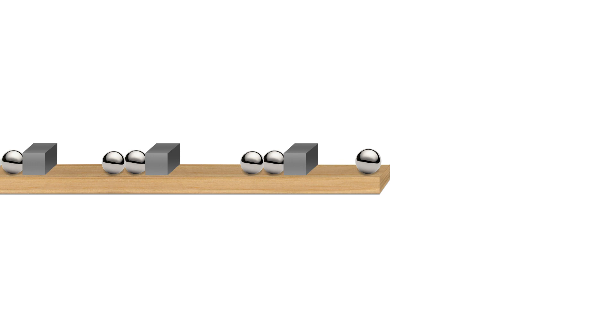Before the first ball is released, there is potential energy stored up between the ball and the first magnet. Magnetic attraction is present, but the ball is being prevented from reaching the magnet.